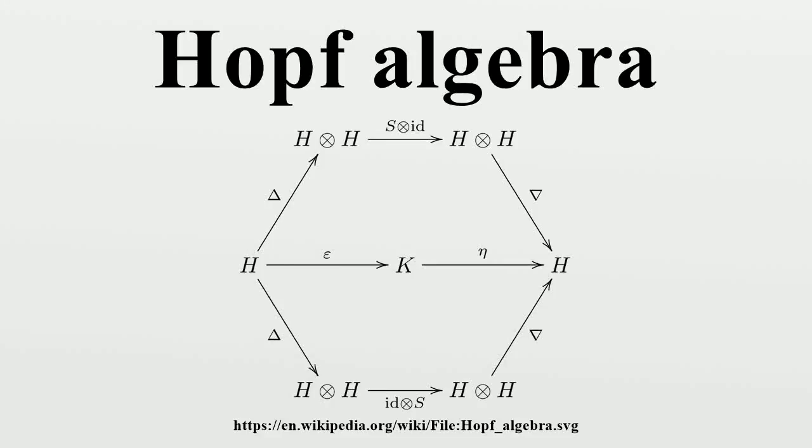In mathematics, a Hopf algebra, named after Heinz Hopf, is a structure that is simultaneously an algebra and a coalgebra, with these structures' compatibility making it a bi-algebra, and that moreover is equipped with an anti-automorphism satisfying a certain property.